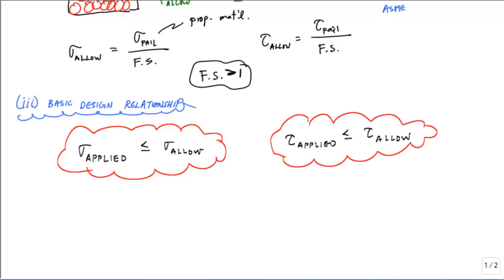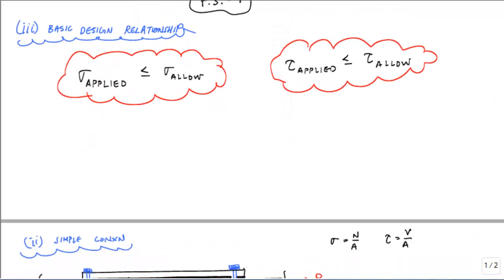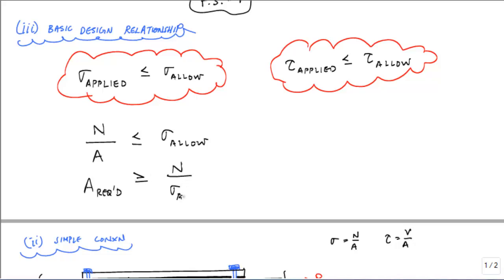To turn this into a design formulation, we take the stress and substitute our constitutive relationships — our basic force-to-stress relationships. For normal stress, N divided by A (the internal normal force divided by the area) gives the applied stress result, which must be less than or equal to σ_allow. Rearranging with basic algebra, the required area A_required must be greater than or equal to N divided by σ_allow, telling us the minimum area we need.